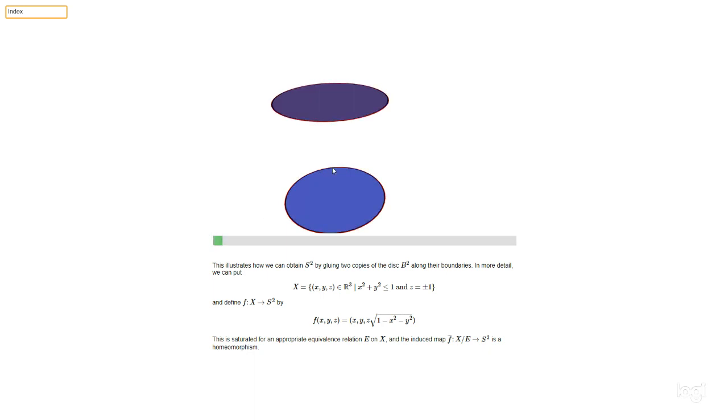So how can we write some formulae for that? We can define a map f from the space X to the sphere S² like this: we take f(x, y, z) = (x, y, z × √(1 - x² - y²)). And so why does this work?